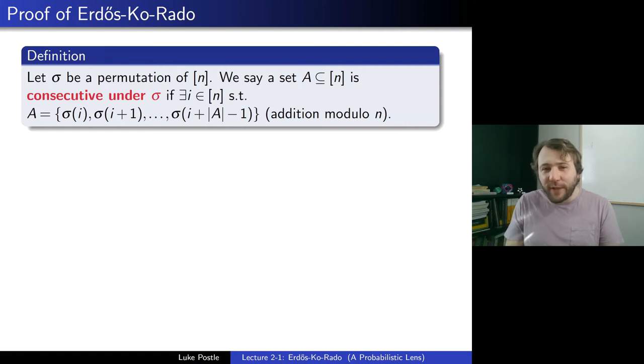Well, here's a nice concept. Let sigma be a permutation of n. So that's somewhat of a random ordering, but here no randomness yet, so we fixed it. We say a set A subset of n is consecutive under sigma if there exists i in n such that A is sigma i, sigma i plus 1, sigma i plus |A| minus 1, addition modulo n. So if I have a permutation, we'll say that a set is consecutive under it if it appears in consecutive order, thinking of it as a cyclic permutation. Allowed to wrap around, that's the addition modulo n.